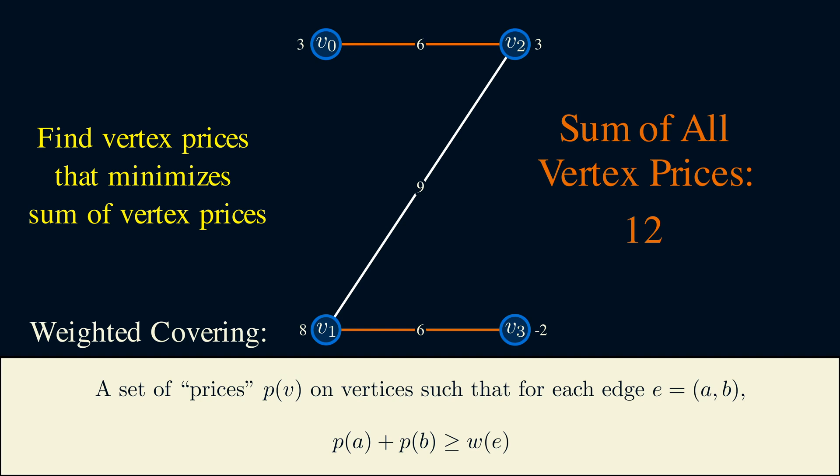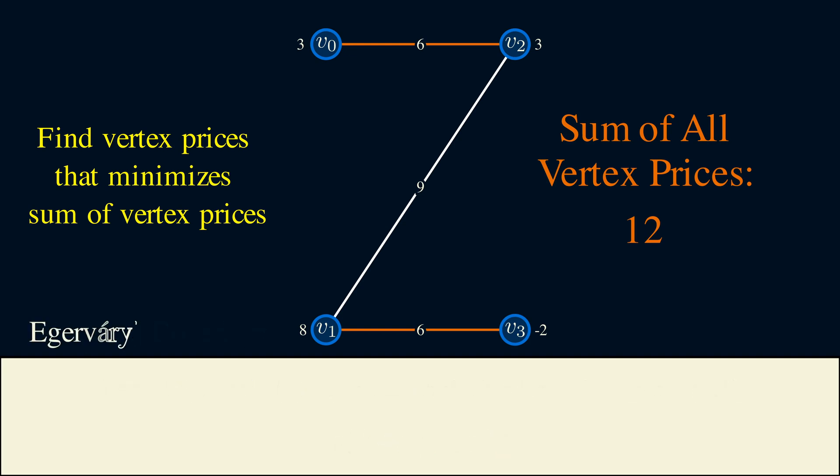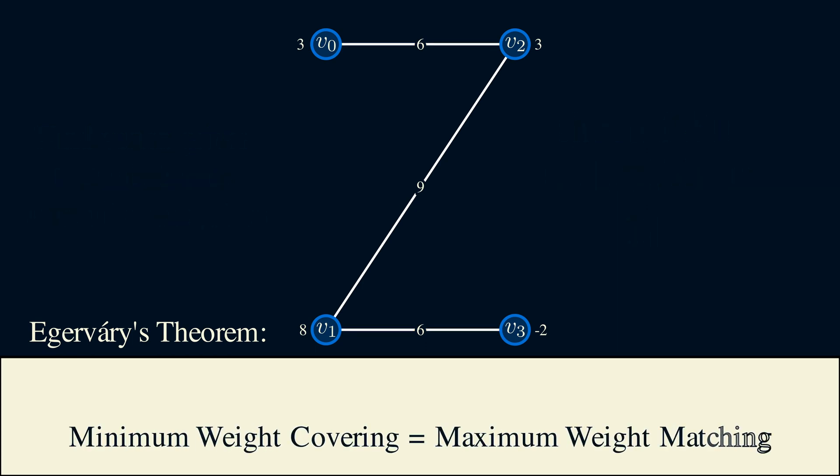There exists an extension of Konig's theorem to weighted graphs called Egerváry's theorem. And it states that the minimum weight covering is equal to the maximum weight matching. Although there are some conditions. The graph has to be bipartite. The edge weights need to be non-negative. And there has to exist a matching where everyone is matched. However, we can always transform a graph into one that satisfies the last two conditions, so those can be easily dealt with. This result establishes a duality between max weight matching and minimum weight coverings.